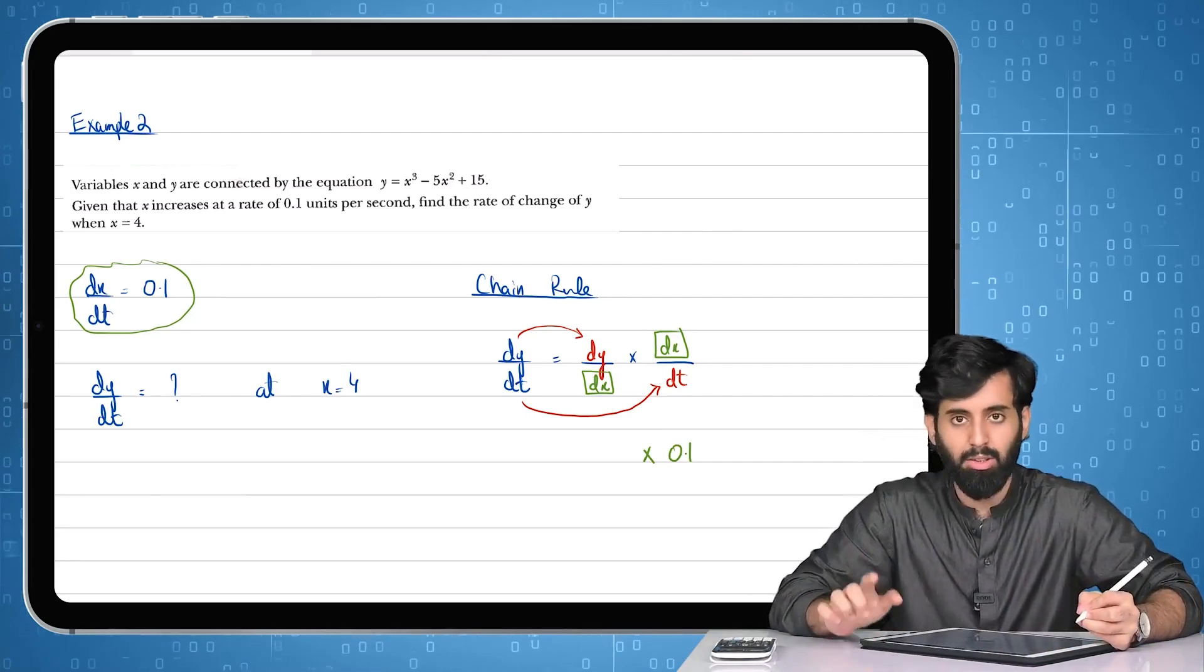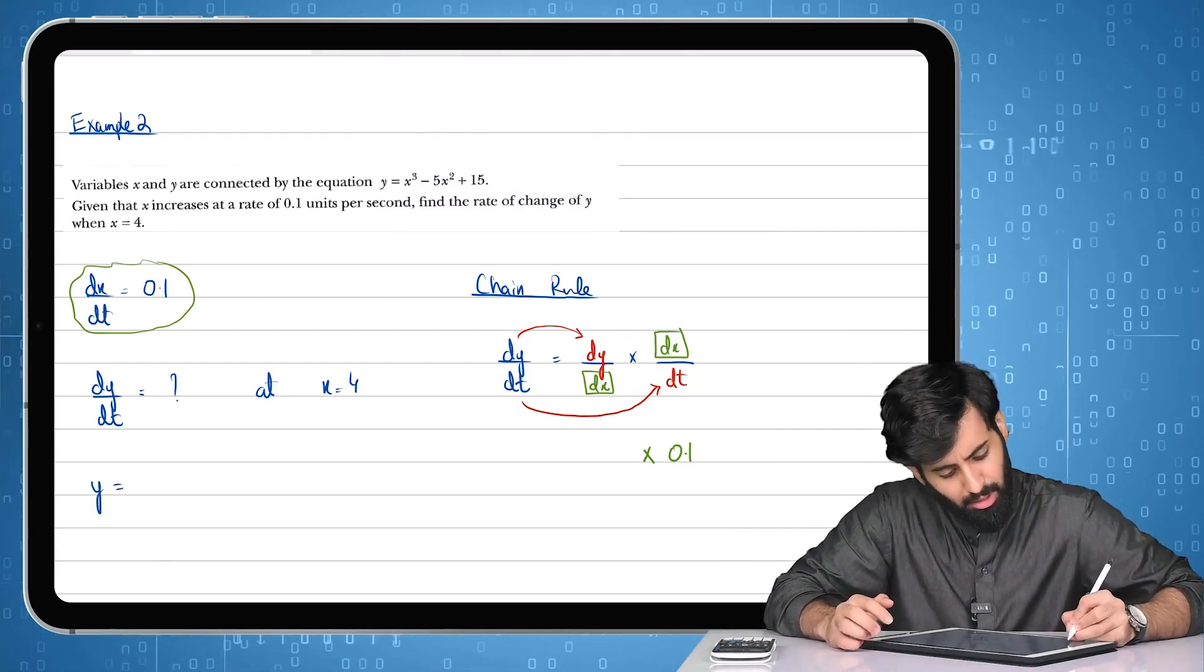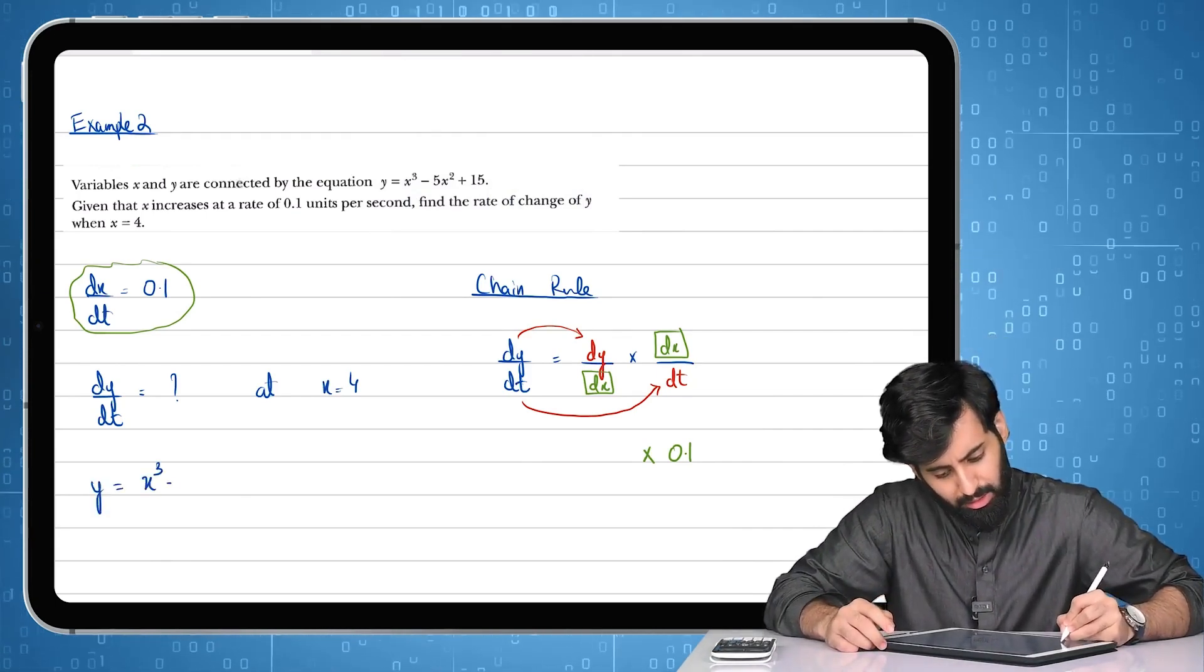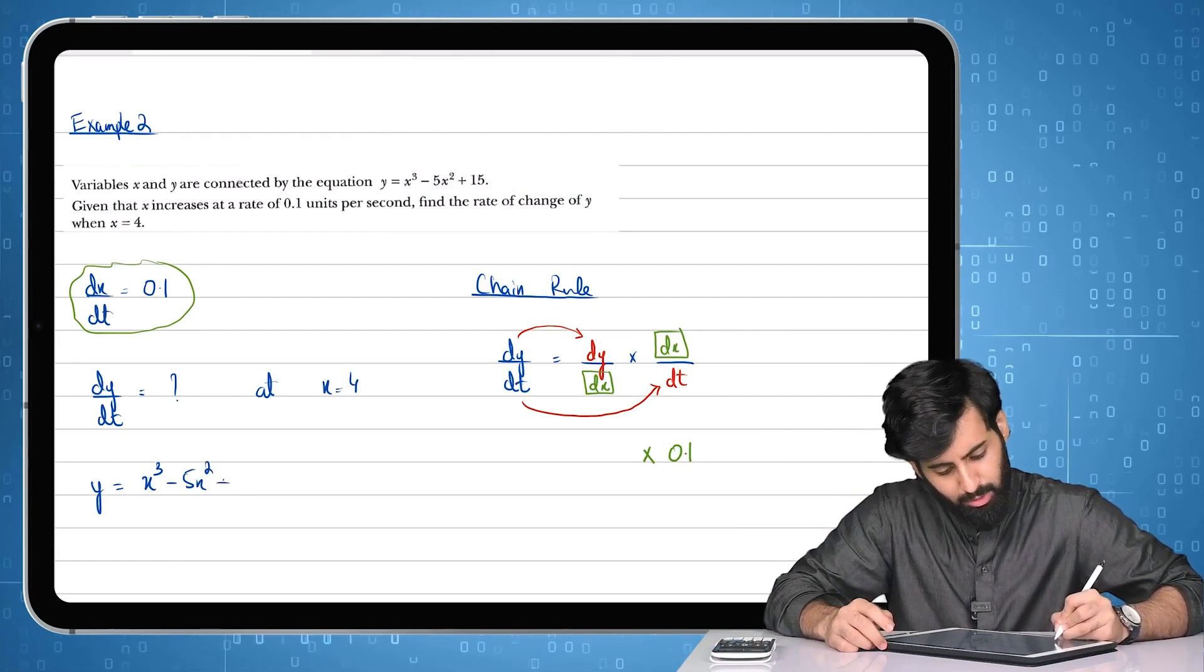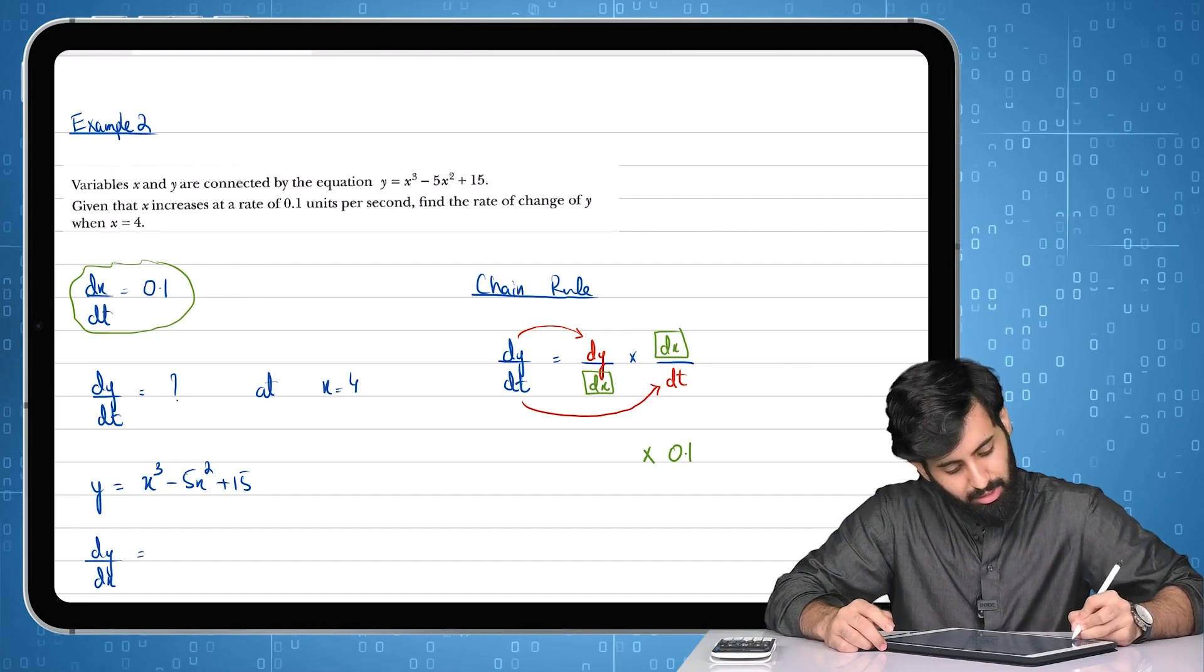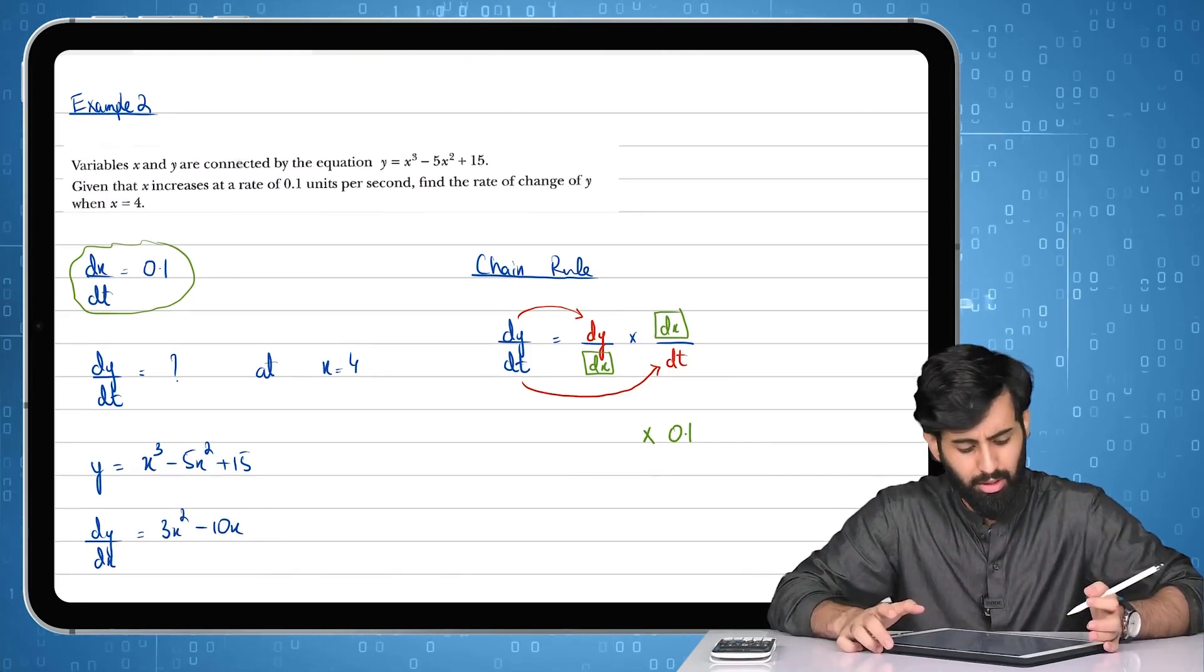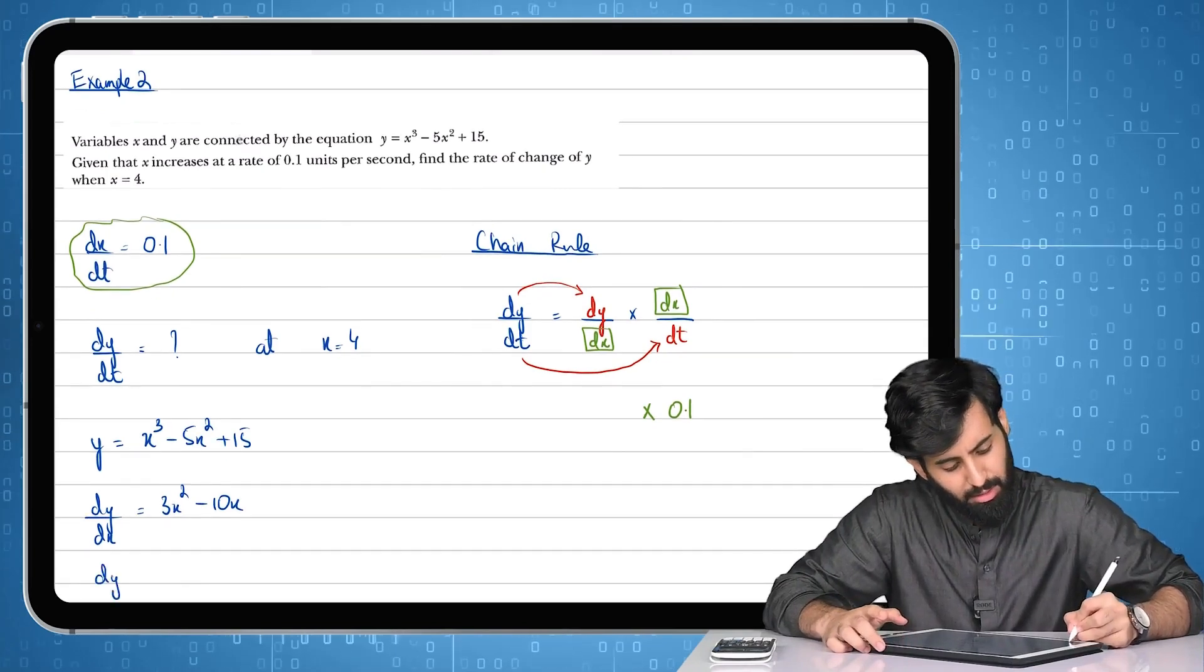Now we have to get our hands on dy/dx somehow. Now we've done questions similar to this, you guys know exactly what I need to do. I need to write down y which is x³ - 5x² + 15. Then let's differentiate y with respect to x, so we have 3x² - 10x plus 0, there's no need to write 0.